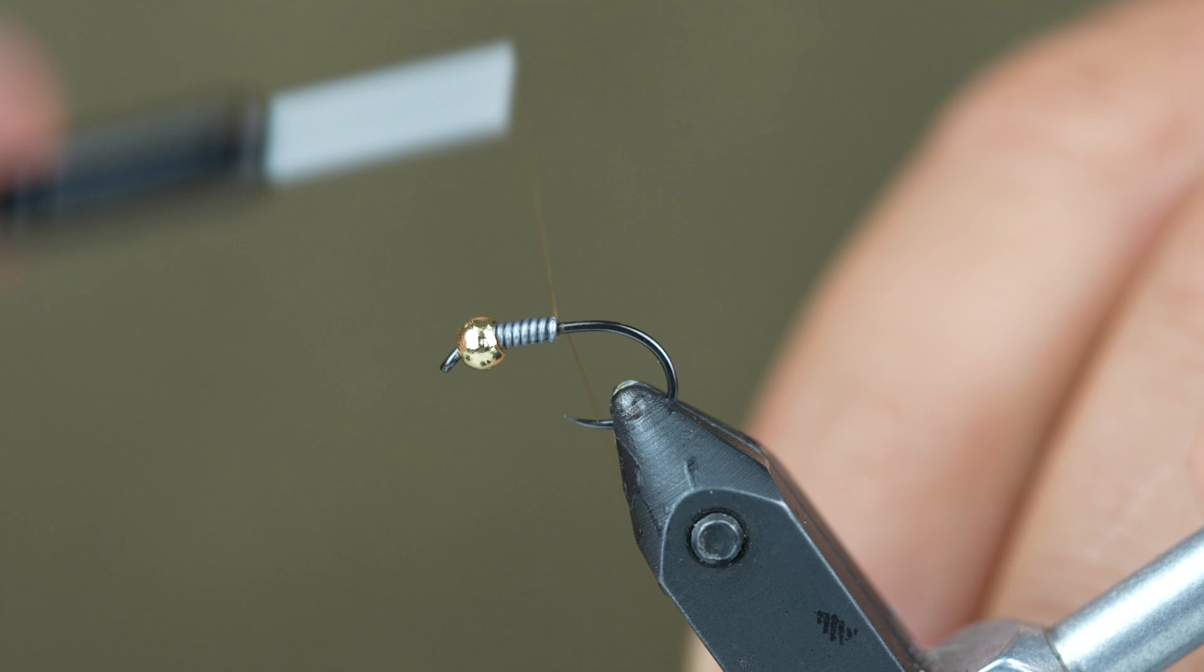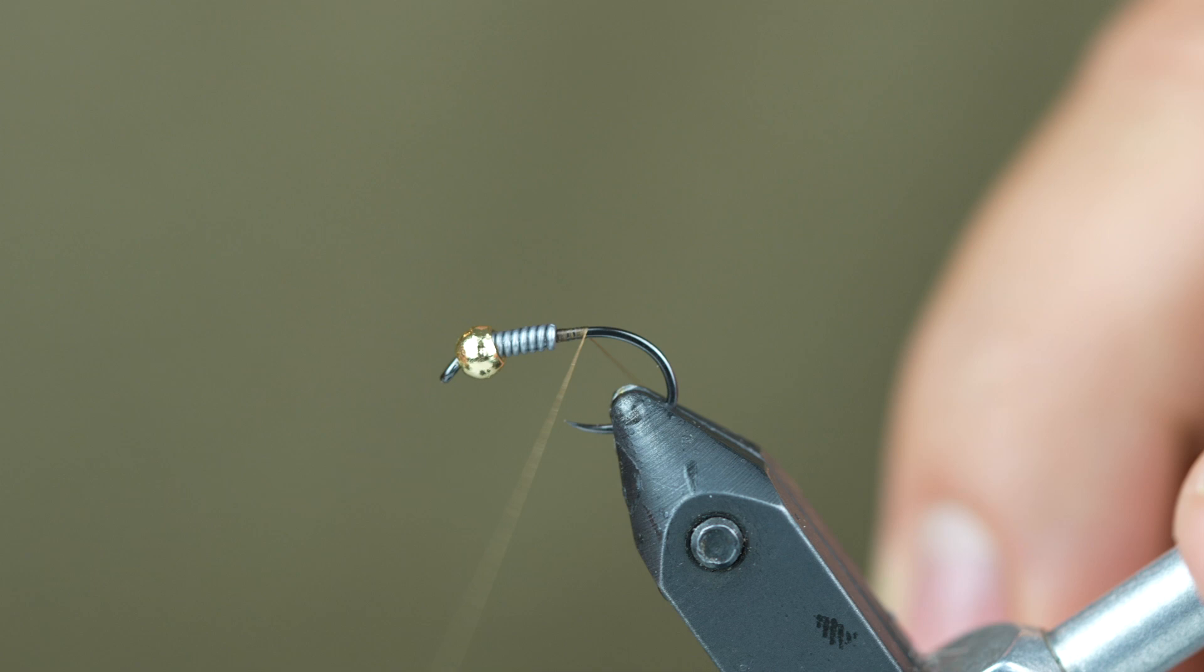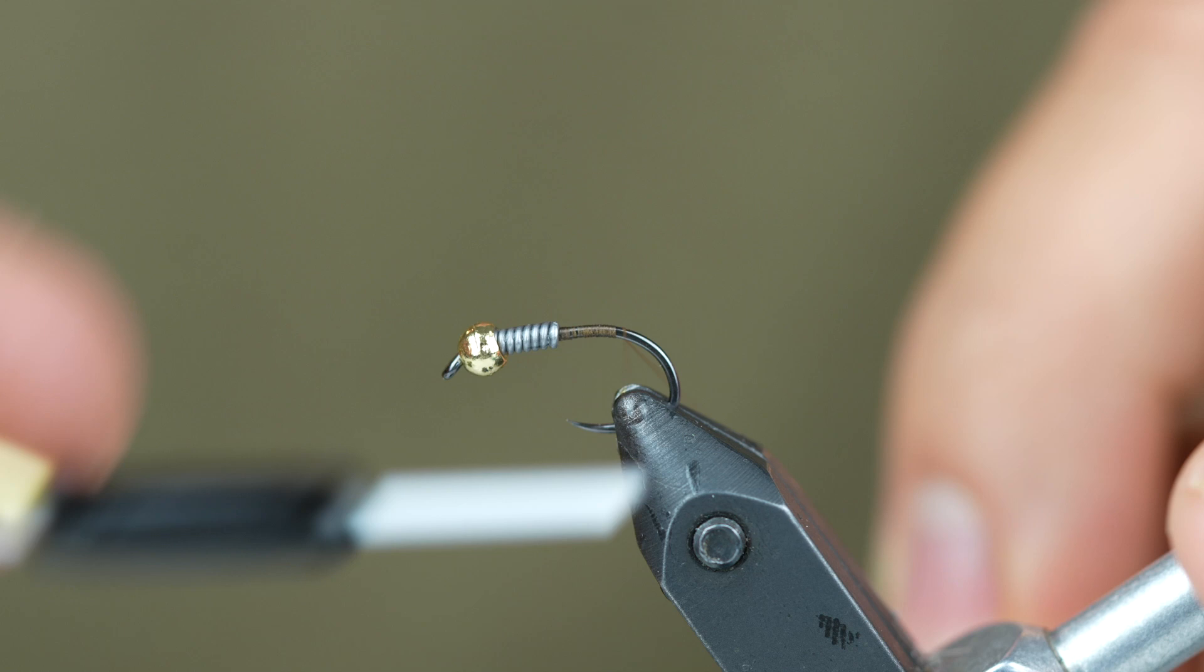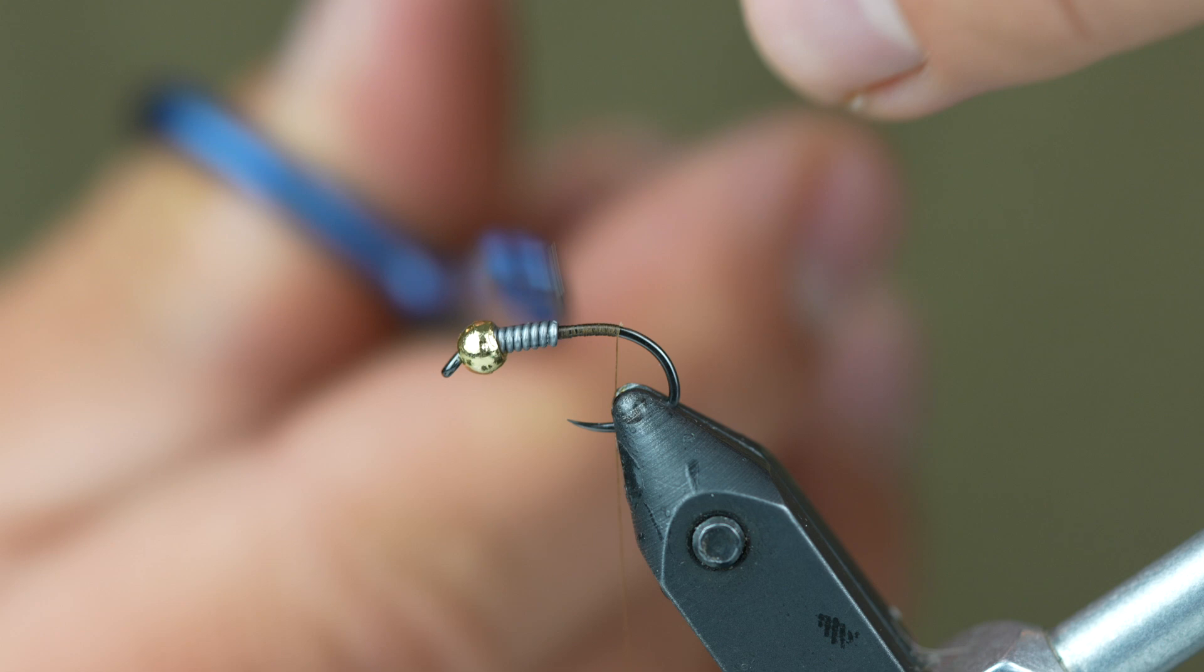So we're going to start and build up a little bit of a thread base right behind it. This is Uni 8-aught thread in camel. If you were going to change up the dubbing colors that you're using, just try to match your thread to something that complements that. We'll wrap back up to the front.